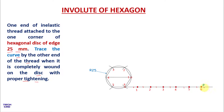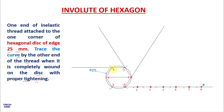We are going to trace the P point on the hexagon. Now extend the six-to-one line up to any distance. In the same way, extend the one-to-two line, two-to-three line, three-to-four line, and four-to-five line.